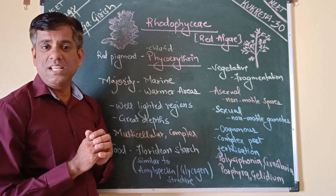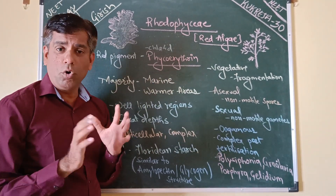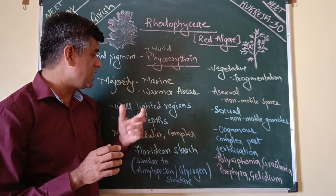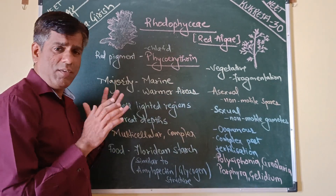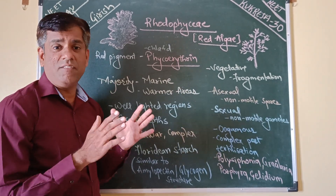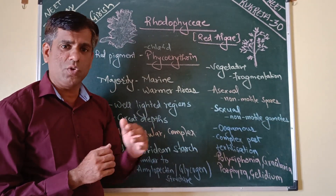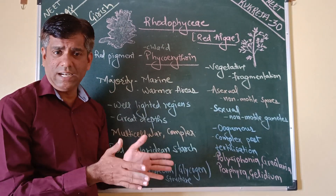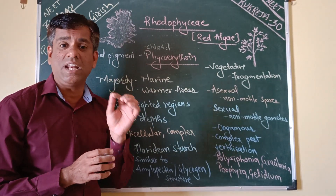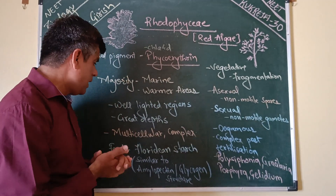The majority of these algae are marine, mostly found in the warmer areas. They are found in the well-lighted regions on the surface of the water, or also at greater depths where very little light penetrates.